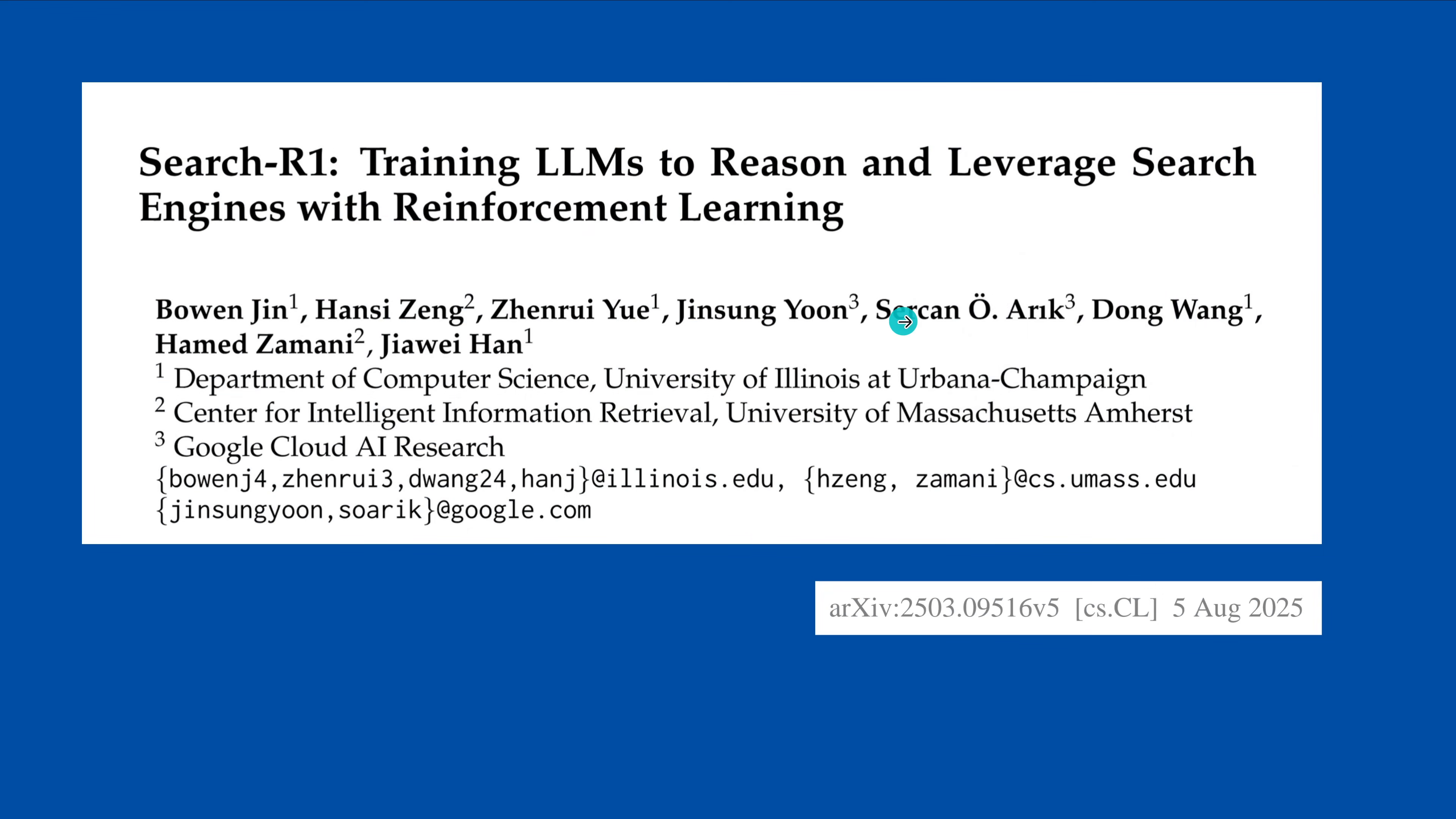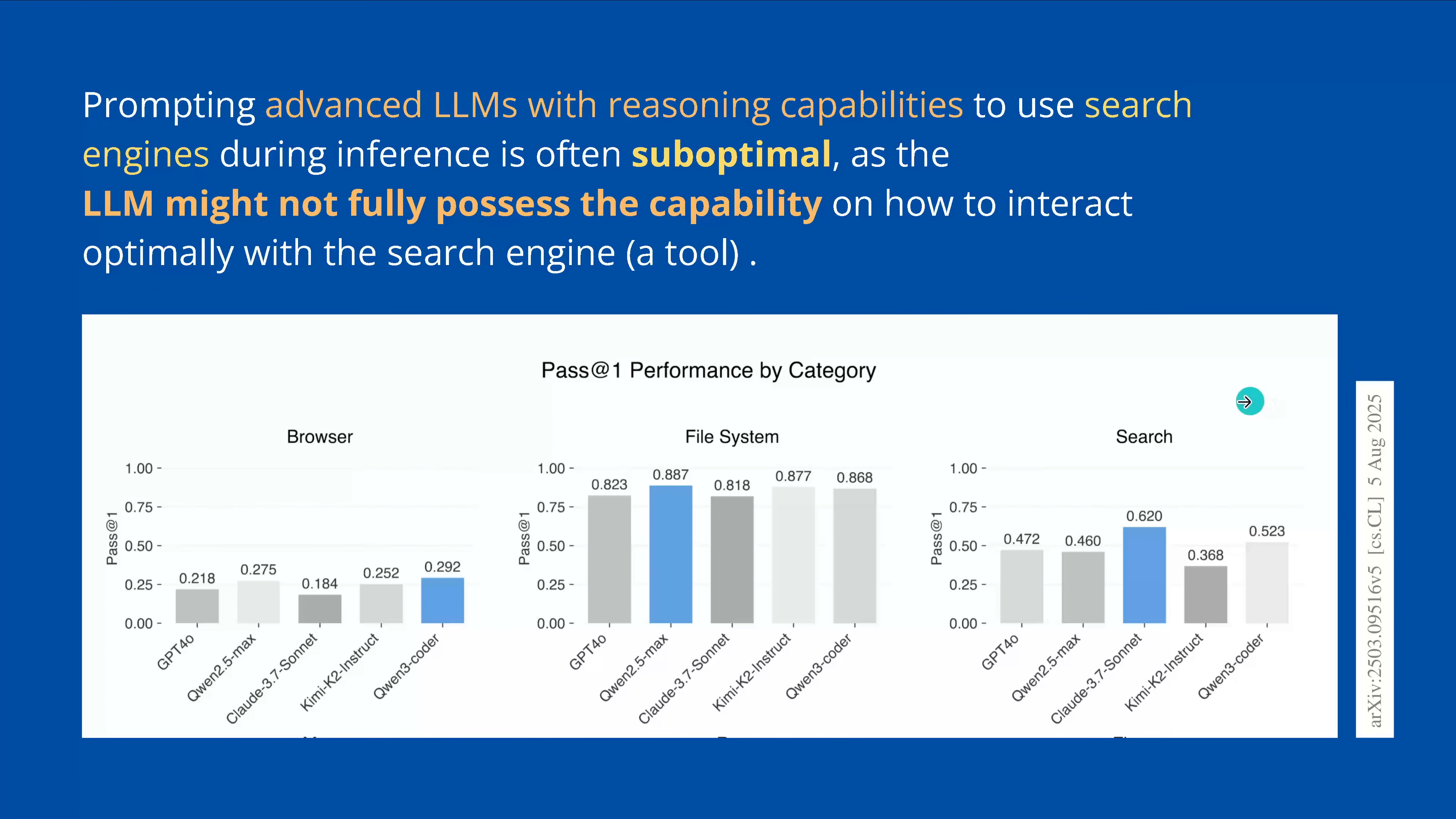Now, you remember this study here by University of Illinois, University of Massachusetts Amherst, and Google Cloud AI Research, and they built SearchR1. Training LLMs to reason and leverage search engines, so two complexities, with reinforcement learning. Of course, what else? We only have reinforcement learning in AI. And the authors here say, we noticed that prompting the advanced LLMs with the reasoning capabilities to use search engine during the inference run is often suboptimal, as the LLM might not fully possess the capability on how to interact with the search engine at all.